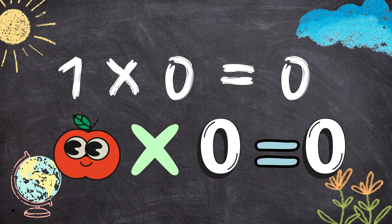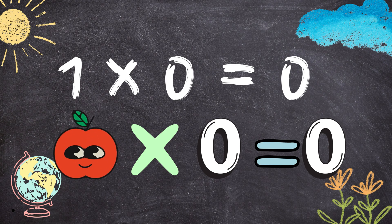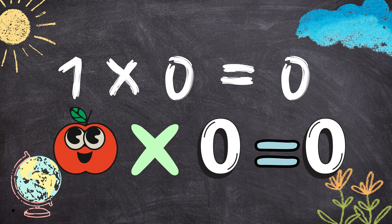1 times 0 equals 0. 1 apple multiplied by 0 apples will equal 0 apples.